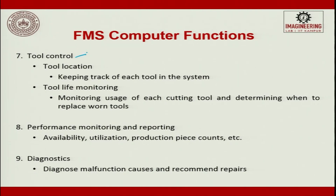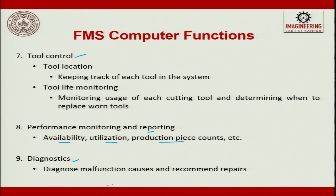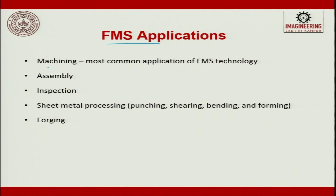Shuttle control coordinates secondary handling systems with the primary handling system. Workpiece monitoring tracks the status of each part in the system. Tool control keeps track of each tool and monitors tool life. Performance monitoring and reporting covers availability, utilization, and production piece count. Alarms are raised when there is a malfunction or when rework is needed on a piece. FMS applications are most commonly in machining, and also in assembly, inspection, sheet metal processing (punching, shearing, bending, forming), and forging.